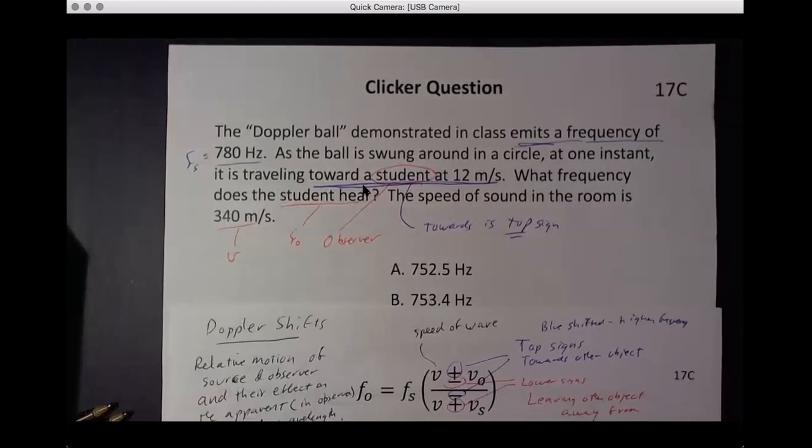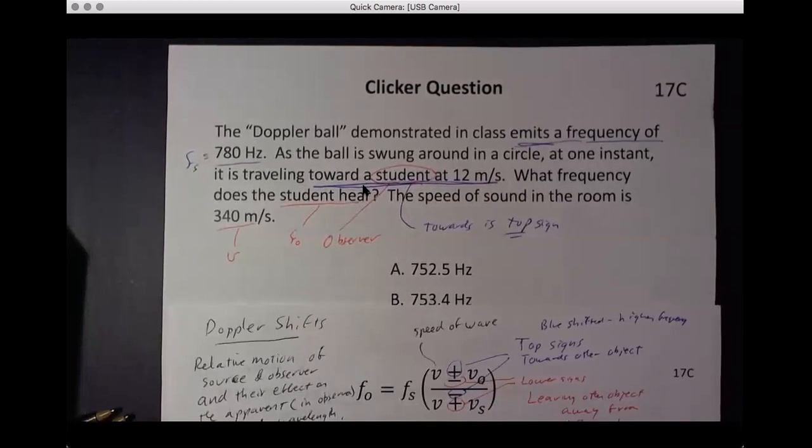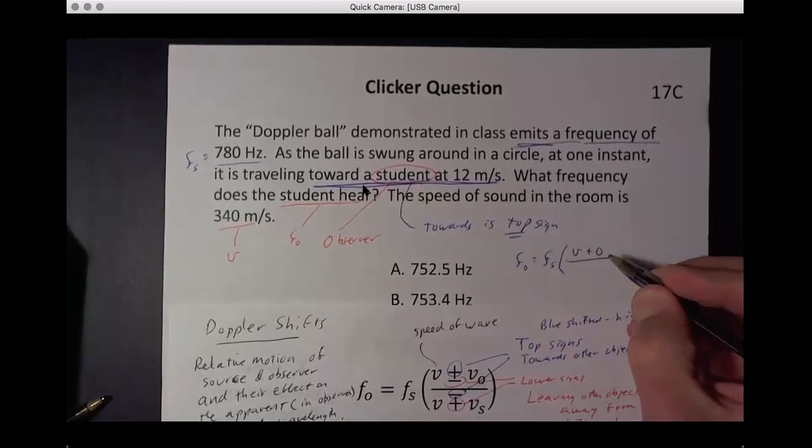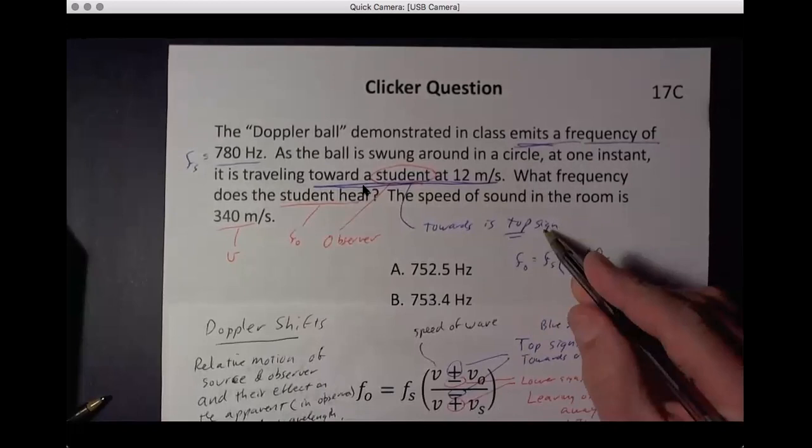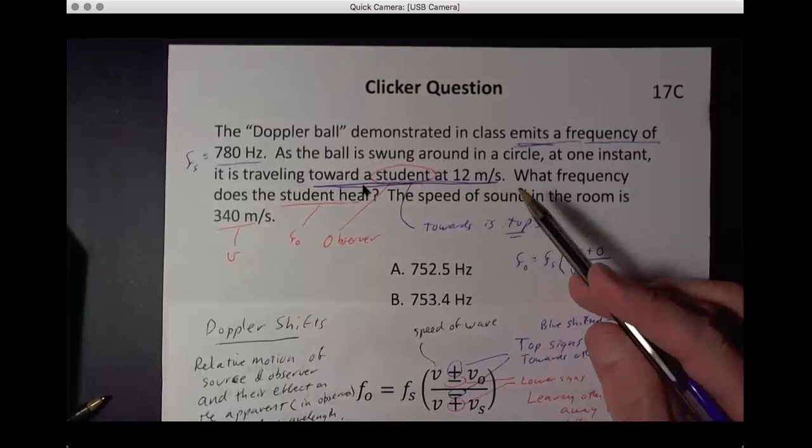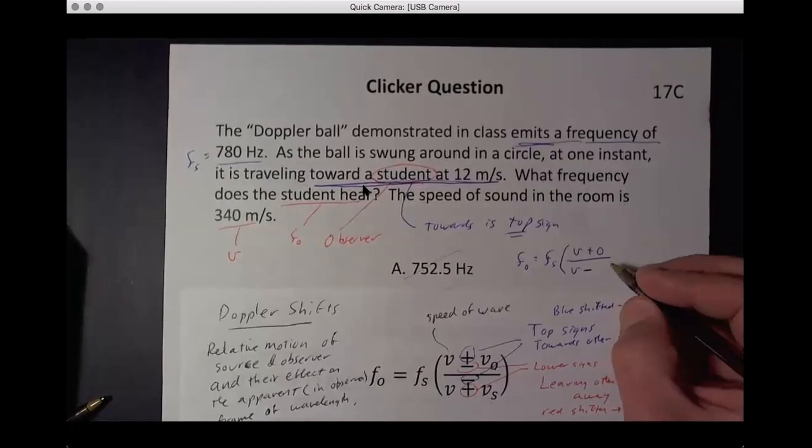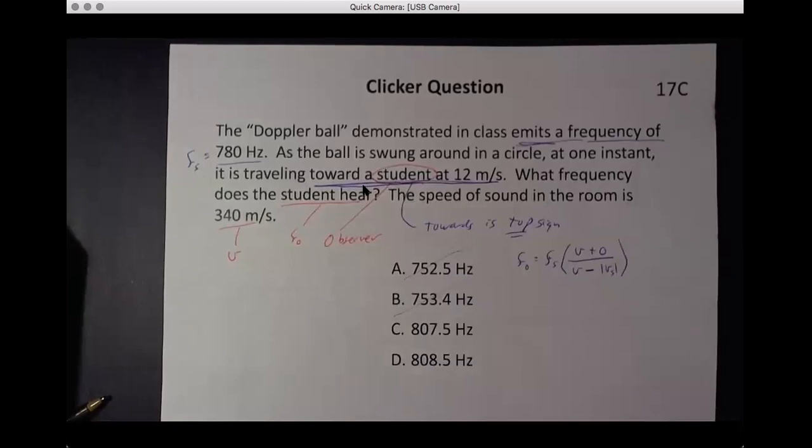Okay, so that's towards is top sign. And the student here, the student, that's our observer, and what frequency does the student hear? Student hear, F observed. The speed of the sound in the room is this. So that's the speed of sound. That's the V. So we go back and we copy down our little equation here. Now the observer is not moving, so it doesn't matter which sign we use there. So we use frequency observer is frequency of the source. It's V, might as well take this plus, plus zero.